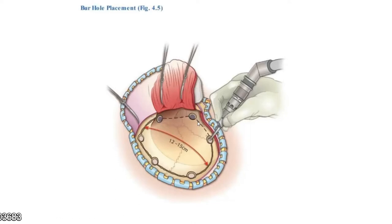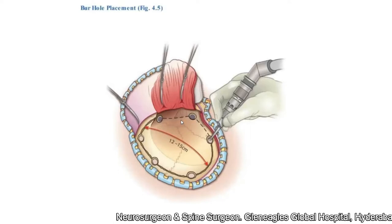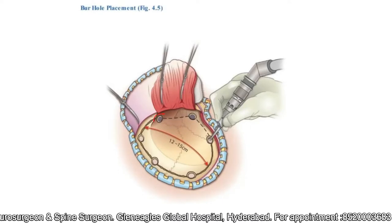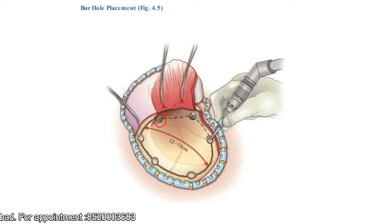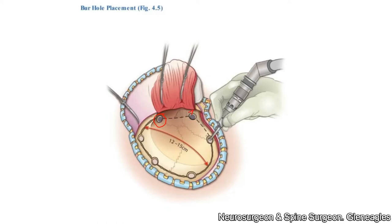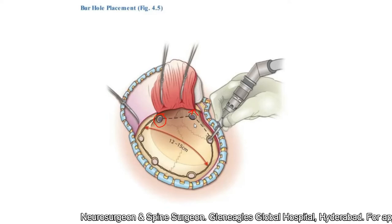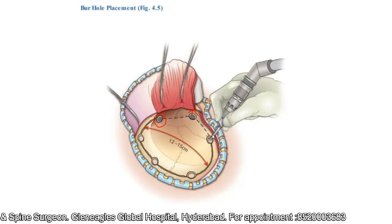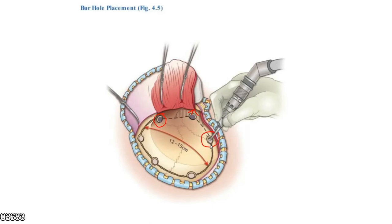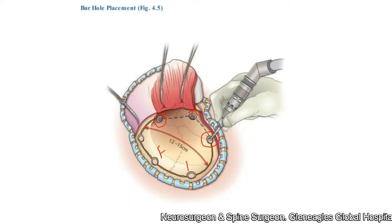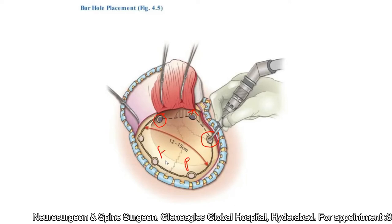We use a high-speed drill to place the burr holes so that the chances of penetrating the dura mater are less. The first burr hole is the classical key burr hole. The second burr hole is placed at the root of the zygoma, as low down as possible on the squamous temporal bone — the more toward the base of the skull, the easier to expose the middle cranial fossa. The third burr hole is above the mastoid; do not open the mastoid air cells. The remaining burr holes are placed along the frontoparietal region near the midline.